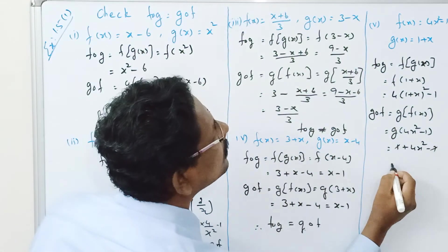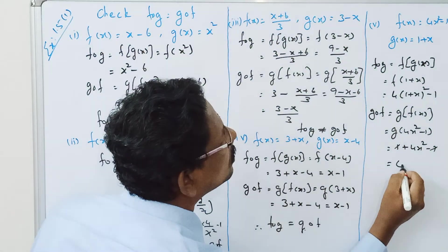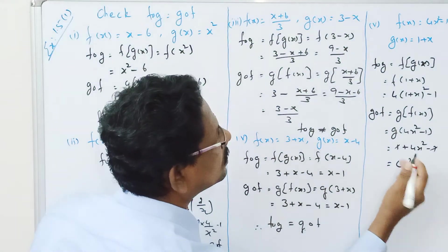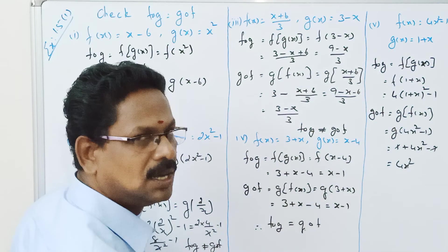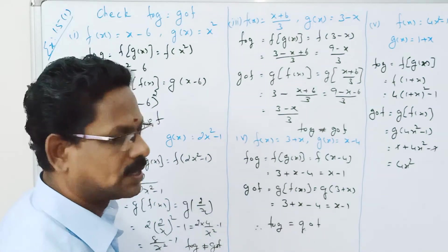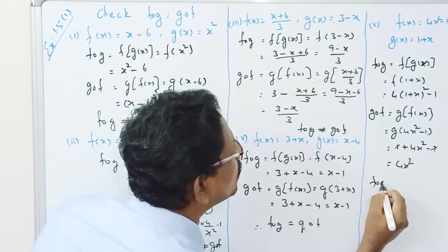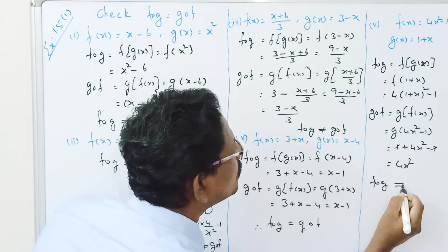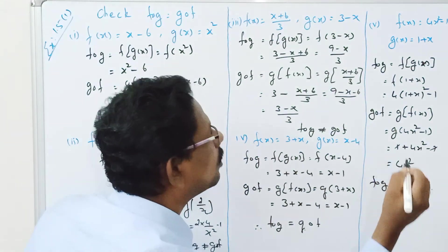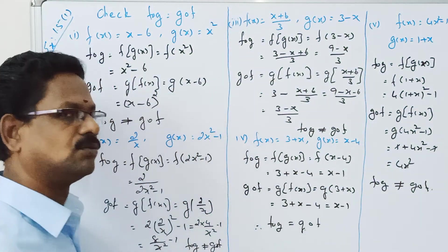The 1s cancel, giving 4X squared. Since the two results differ, F composition G is not equal to G composition F.